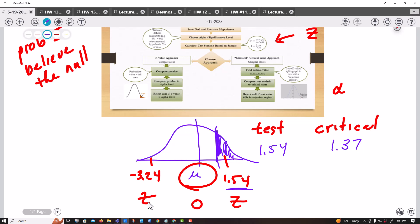Notice that the 1.37 is like right here, so all of this we call our critical region. If we are in it, we reject the null. We're saying that's too far. However, if we had a test statistic of, let's say, 1.27, that would not be in the critical region and we would not reject it.